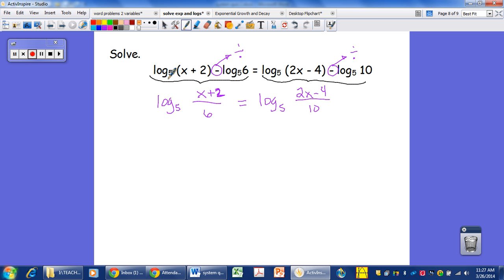So once again, this quantity must be equal to that quantity if their logs are also equal. So x plus 2 over 6 must equal 2x plus 4 over 10. These have to be the same values. So what I have here are two rationals that are equal. We solve these by cross multiplying. That's how we solve any equal proportion.